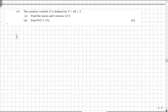In part 2 of this question, we need to find the probability Y is less than 15. But we know that Y links directly to X in the form 4X + 2. So what X value corresponds to Y equals 15?